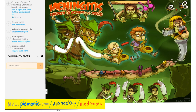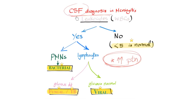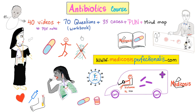How to diagnose meningitis: history, physical exam, and lumbar puncture. Tap the lumbar and look at the leukocytes. No leukocytosis — patient's probably normal. Leukocytosis present — what kind? Neutrophils: bacterial meningitis. Lymphocytes: ask the next question — what's the glucose level? Glucose is low: a living organism is eating your glucose — fungal or TB. Glucose is normal: that's a non-living particle — viruses.